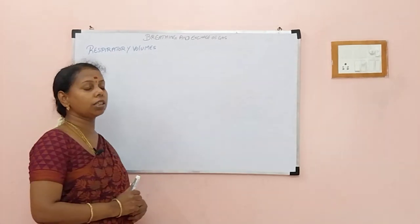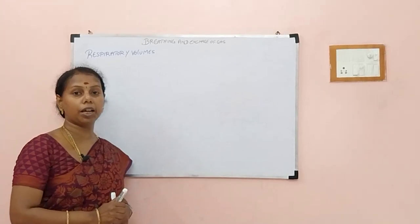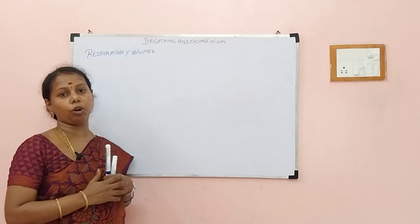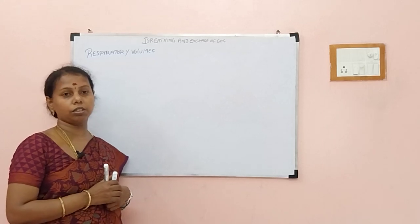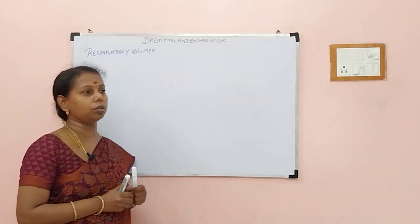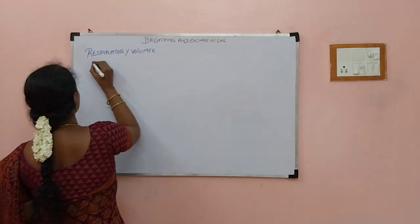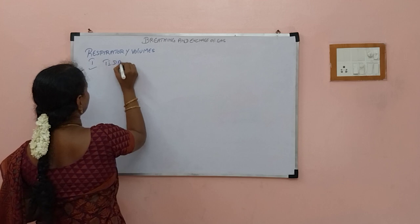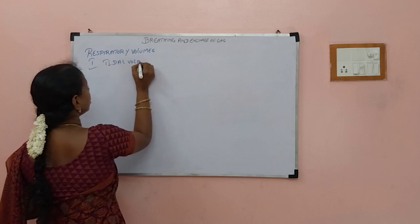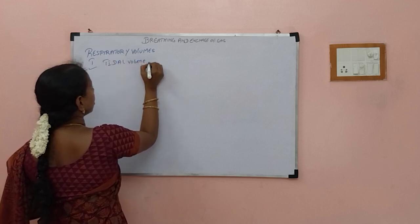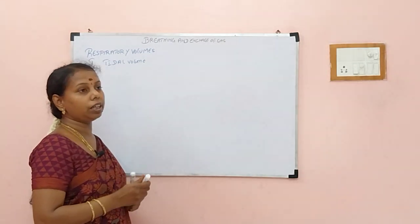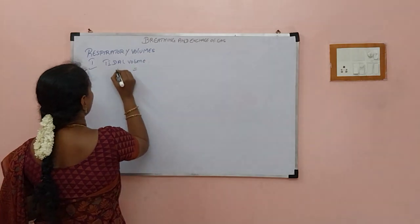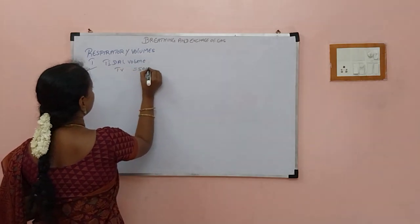Respiratory volumes will be asked as a question in the form of a match — for example, '500 ml is what volume?' They can ask questions by giving two columns. So the first one is called tidal volume. Tidal volume is our normal breathing — what we inhale and exhale — which is around 500 ml.